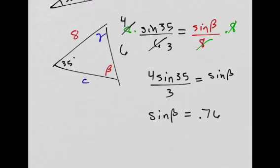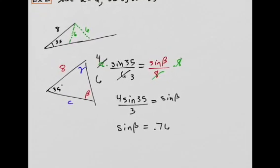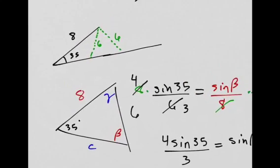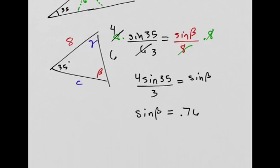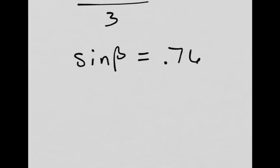So this might be the confusing part. But remember, I already know that beta can be two different angles. And then that means those could be two different angles as well. So let's think about this. How do I solve this? 0.76 is not on the unit circle. I can take the arc sine of both sides, the inverse sine of both sides. So that's what I'm going to do.